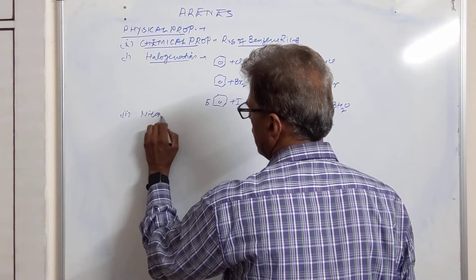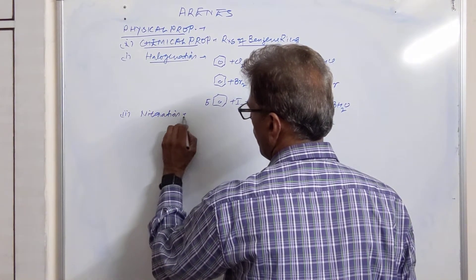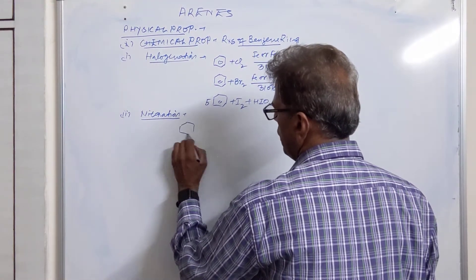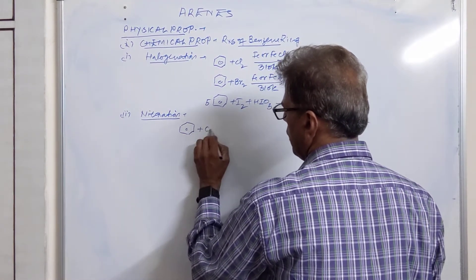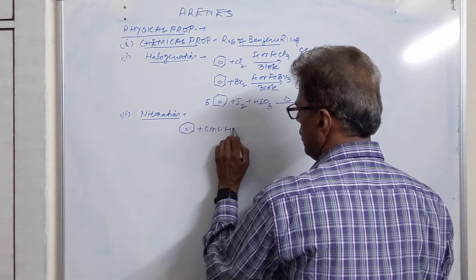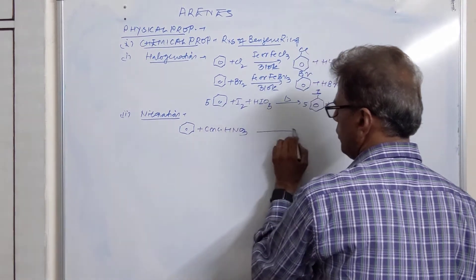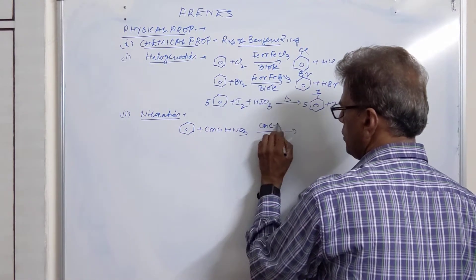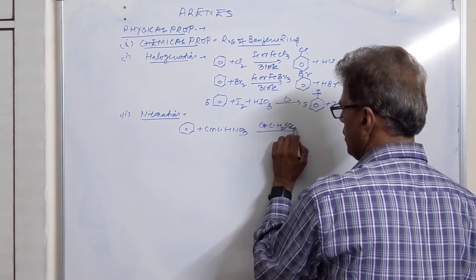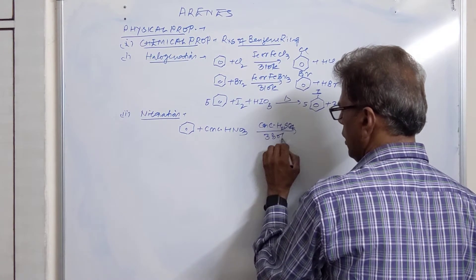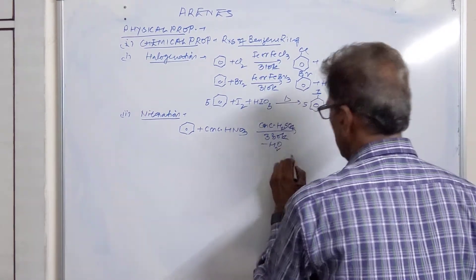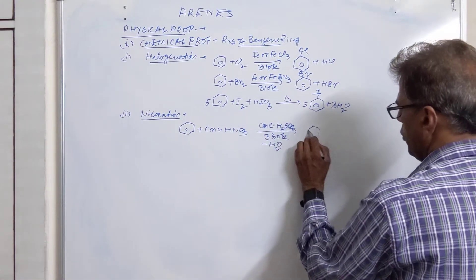Then we have the second reaction of benzene. That is nitration. Benzene treated with concentrated HNO₃ in the presence of concentrated sulfuric acid at 330 Kelvin loses water and we get nitrobenzene.